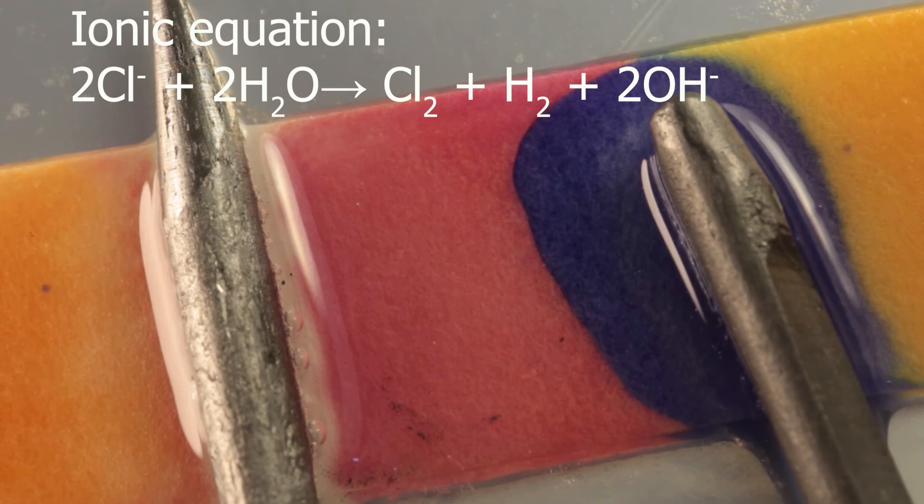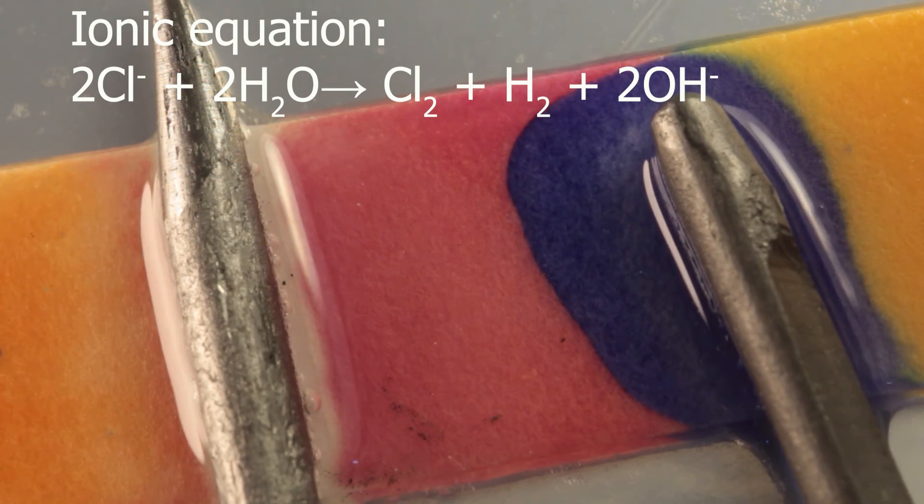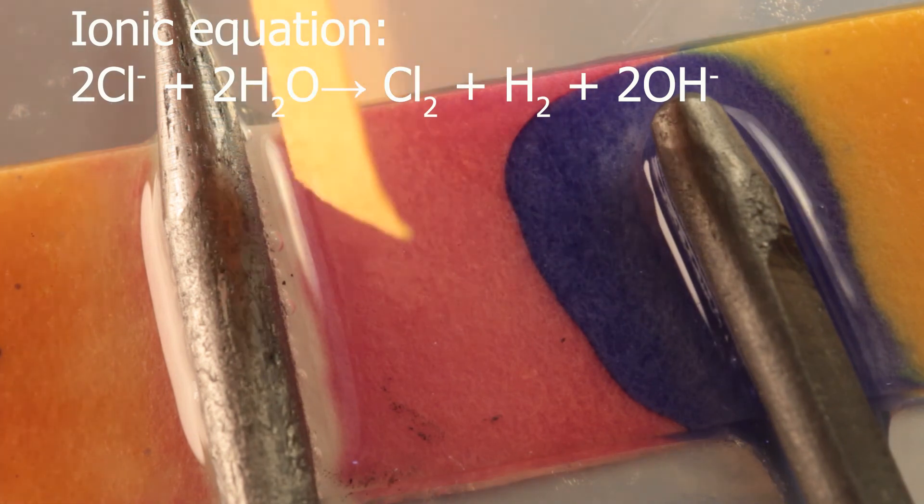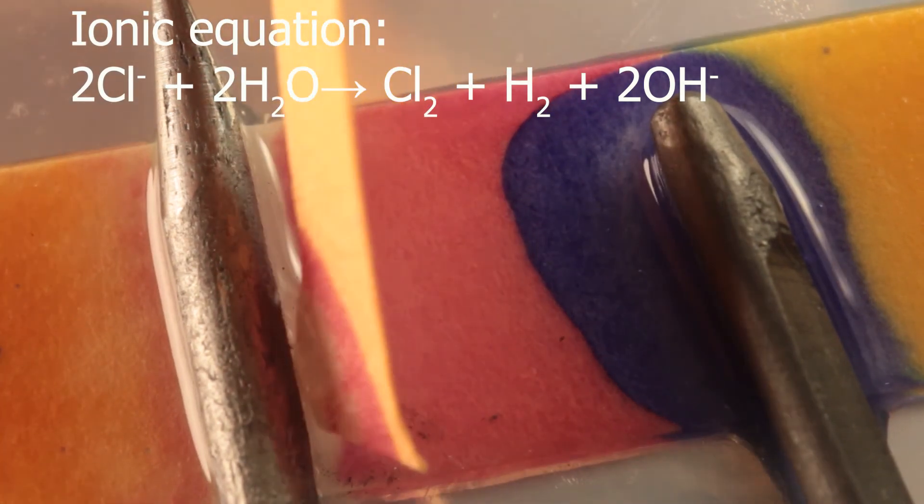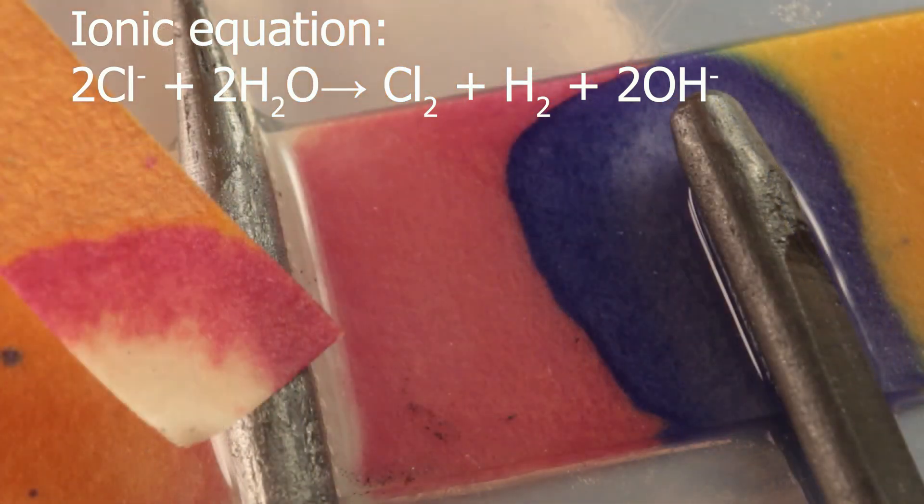Here is full ionic equation. You see the only species which are participating in the reaction is chloride ions and water molecules. Chlorine gas is formed, hydroxide ions and hydrogen gas.